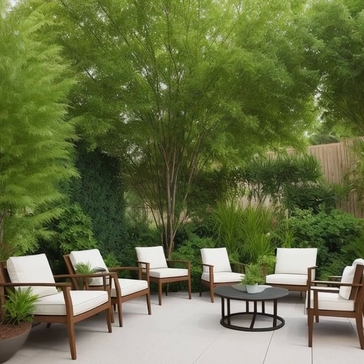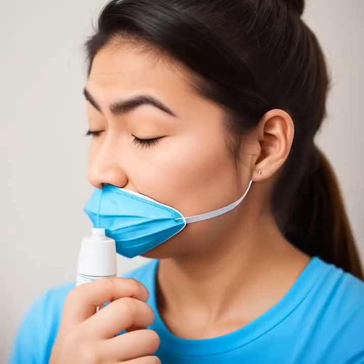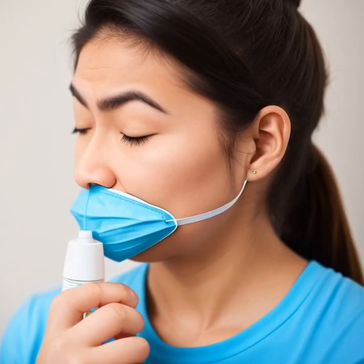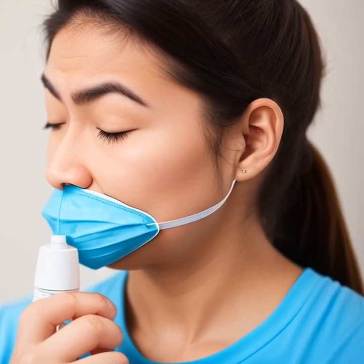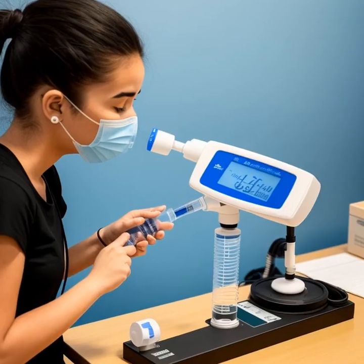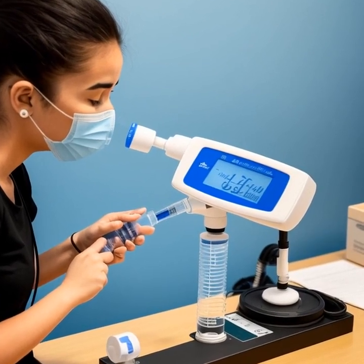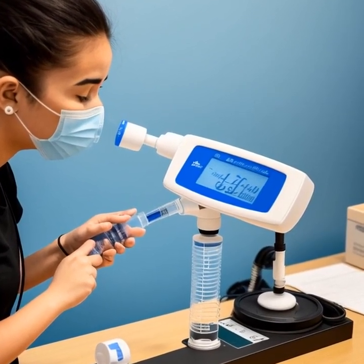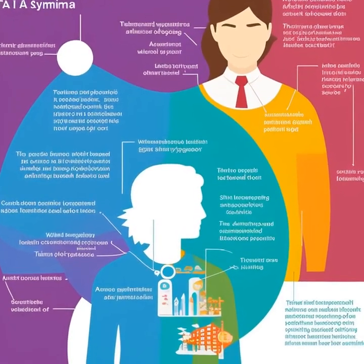Environmental control measures are also crucial in managing asthma. Identifying and avoiding triggers is an essential step in preventing exacerbations. For instance, if allergens are a trigger, measures like using allergy-proof bedding, vacuuming regularly, and using air purifiers can help reduce exposure. Similarly, if irritants like smoke or strong odors are triggers, avoiding these substances and maintaining good indoor air quality can make a significant difference.